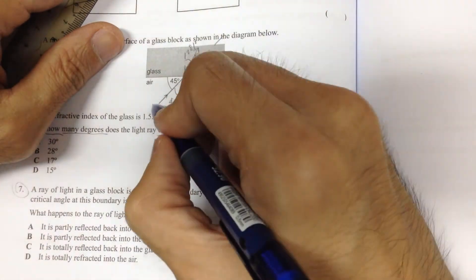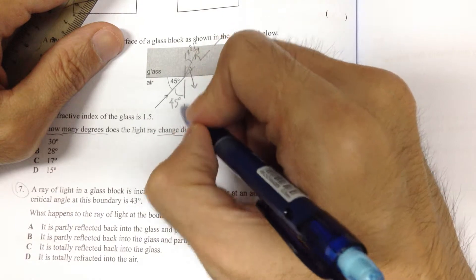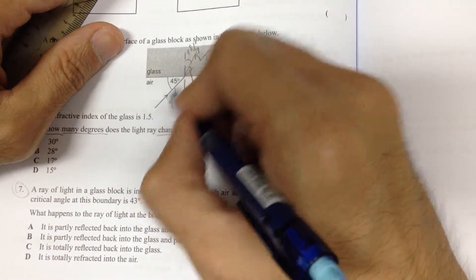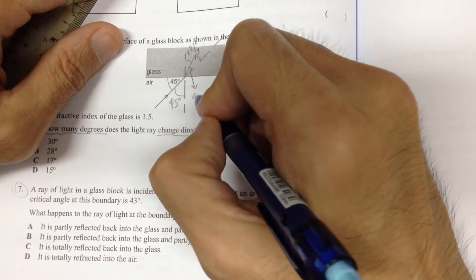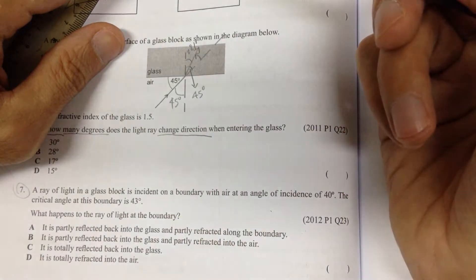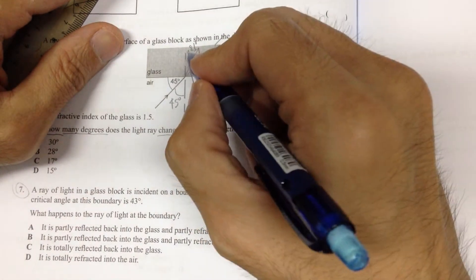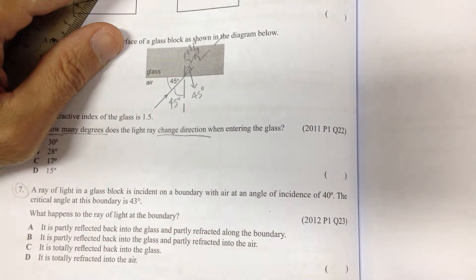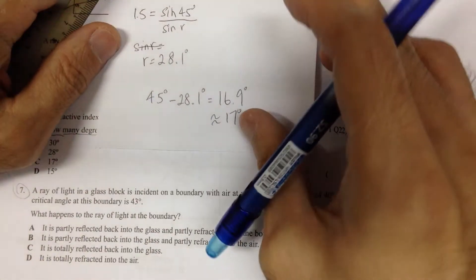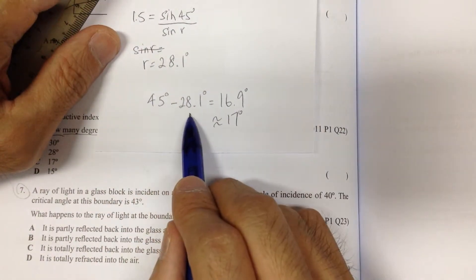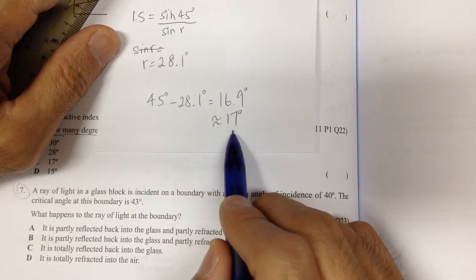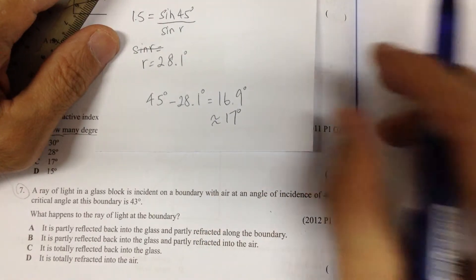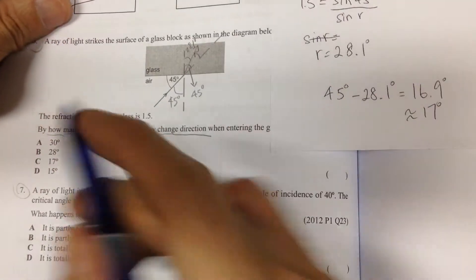Now, this is simple because the total original angle using vertically opposite angles, this line and this line is 45 degrees. So, if this is 45 degrees, this is 28.1. This change will simply be 45 minus 28.1 equal to 16.9 degrees or to round up 17 degrees. So, the answer is C.